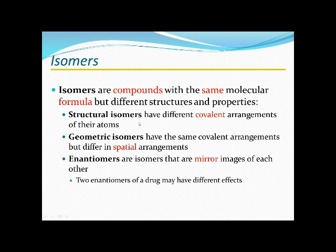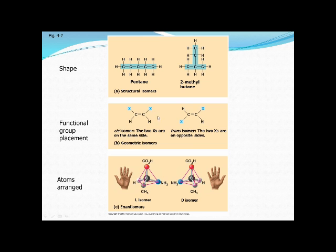Isomers are compounds — a lot of them mainly composed of carbon — that actually look very similar. Even though they look similar, they don't necessarily have the exact same function. Some types may be referred to as structural isomers, geometric isomers, and enantiomers. Here you have the structural isomers, here the geometric isomers, and here the enantiomers.